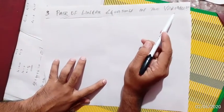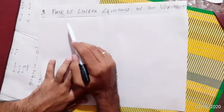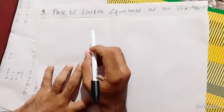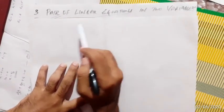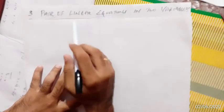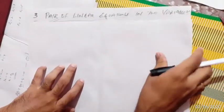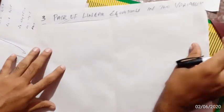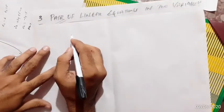In Class 8 you learned what a linear equation is and how to solve linear equations. In Class 9 you learned how to draw a graph of a linear equation. Now we continue with the pair of linear equations in two variables. In Class 8, we studied the general form of a linear equation.